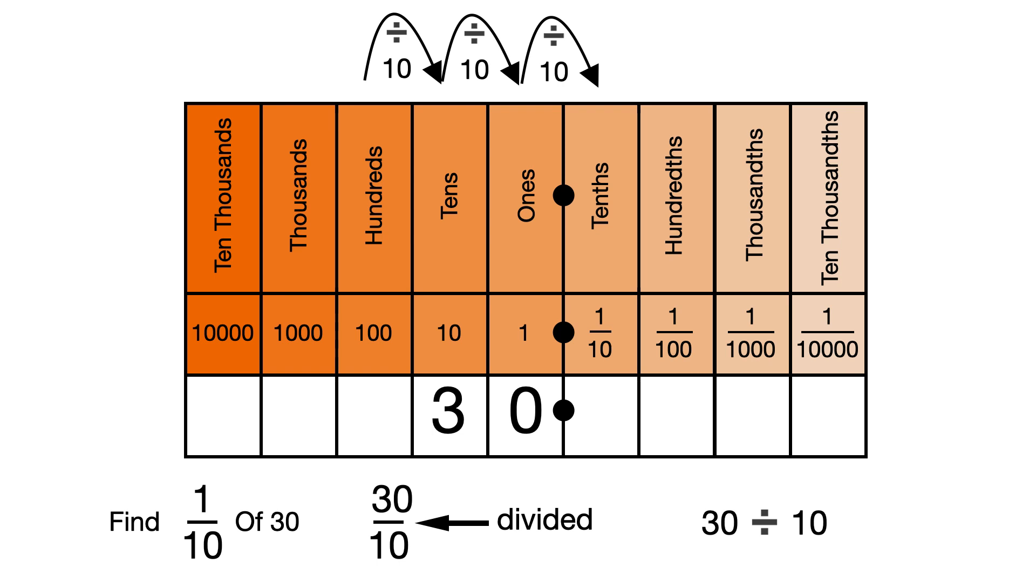So to divide 30 by 10, we move the digits one place each to the right. 1 tenth of 30, or 30 divided by 10, is 3.